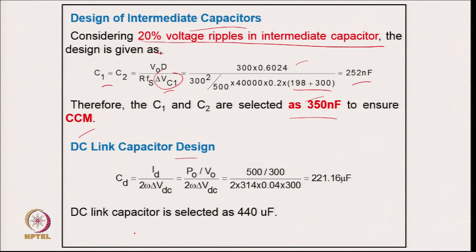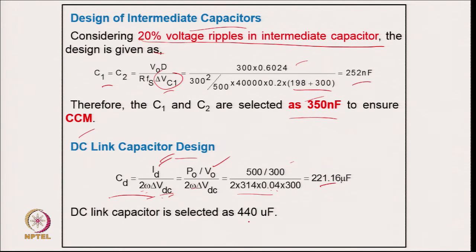Coming to the DC link capacitor: using C_d = I_d / (2 × ω × ΔV_d), where the load current and 4 percent voltage ripple at the second harmonic are used. Putting in all values gives 221.16 μF. To ensure the ripple stays below 4 percent, the DC link capacitor is selected as 440 μF.